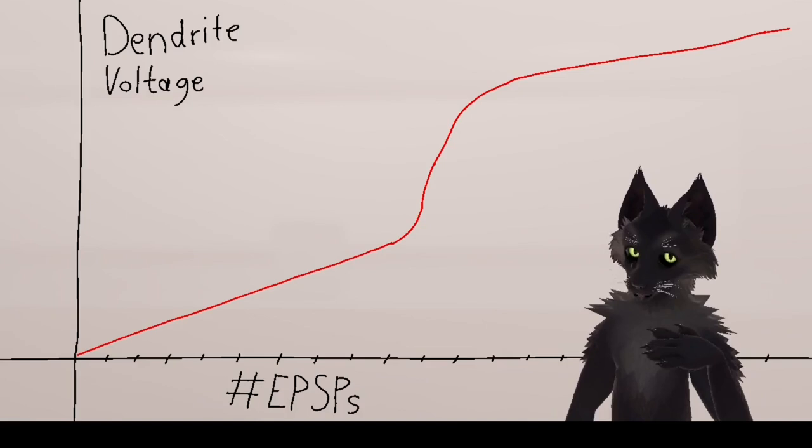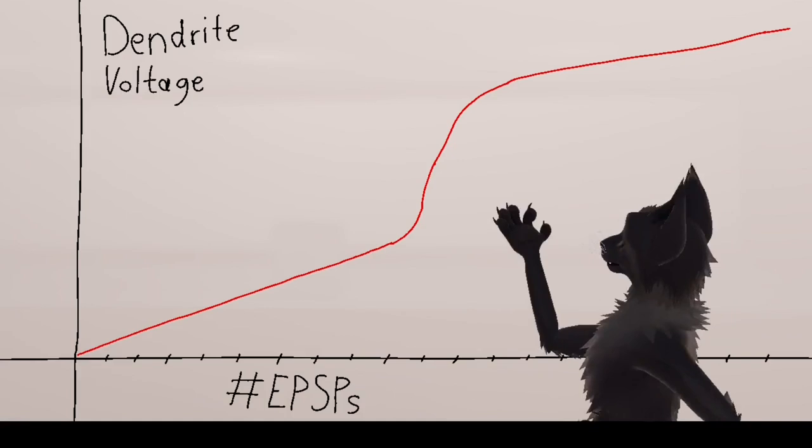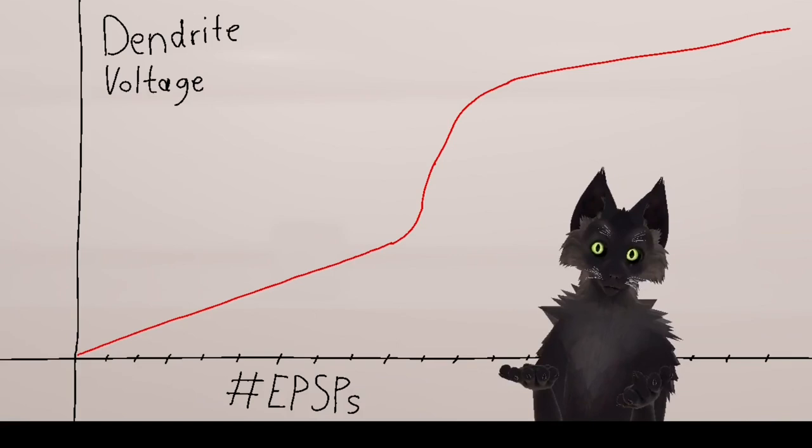Now let's ask, why does the dendritic threshold exist? What is its purpose? What does it do? What problem does this solve? We've actually already touched upon this. The answer is that neurons can represent multiple objects.